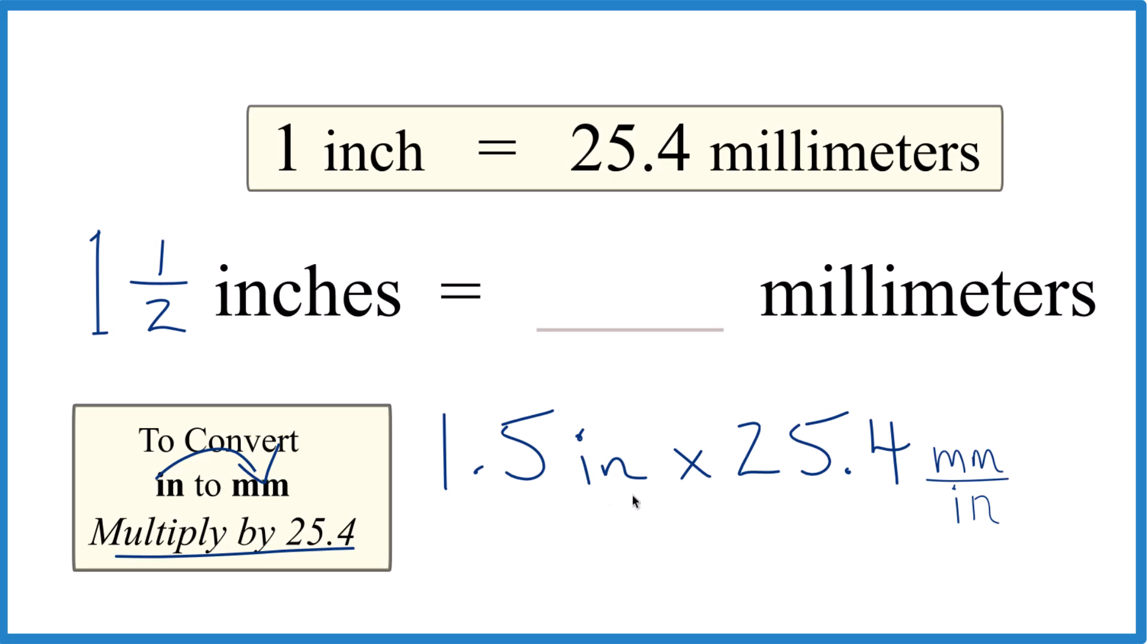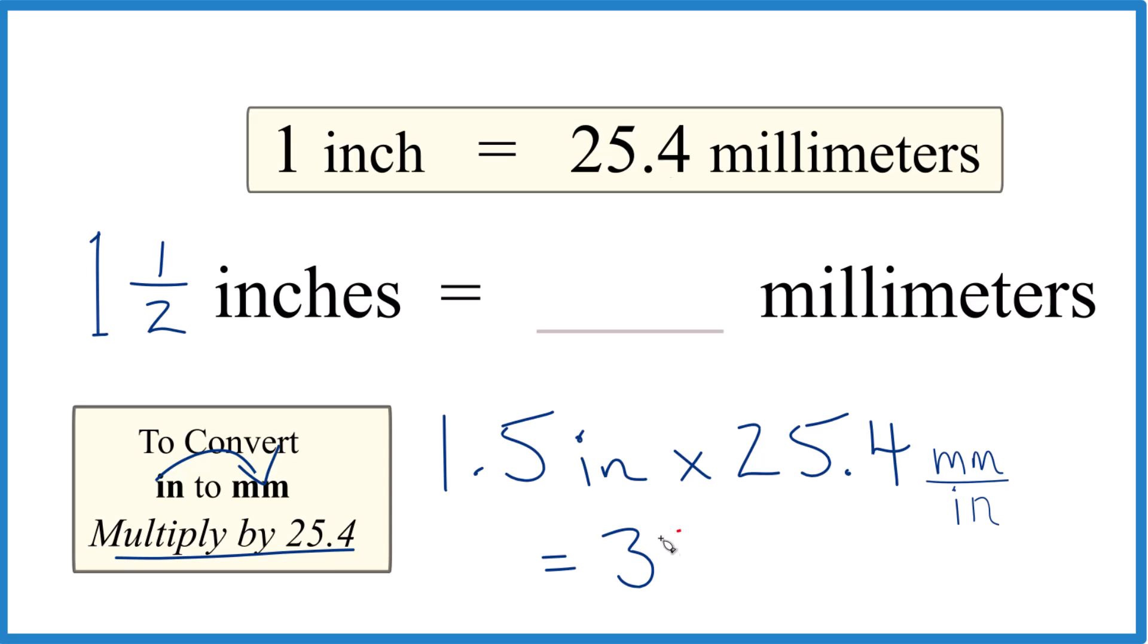So we're gonna multiply 1.5 times 25.4. We end up with 38.1. And we have inches on top and the bottom here, right? So when we multiply, those are gone. We're left with millimeters.